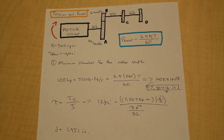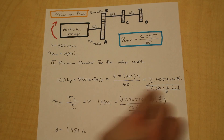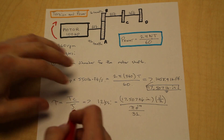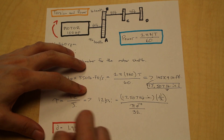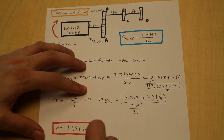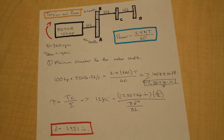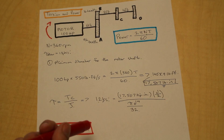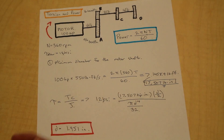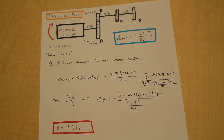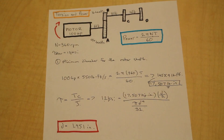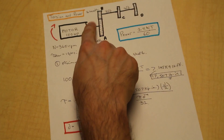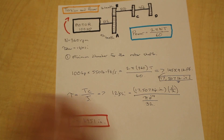Solving for D in this equation, we get 1.951 inches, which is the minimum permissible diameter for the section from the motor to gear A.